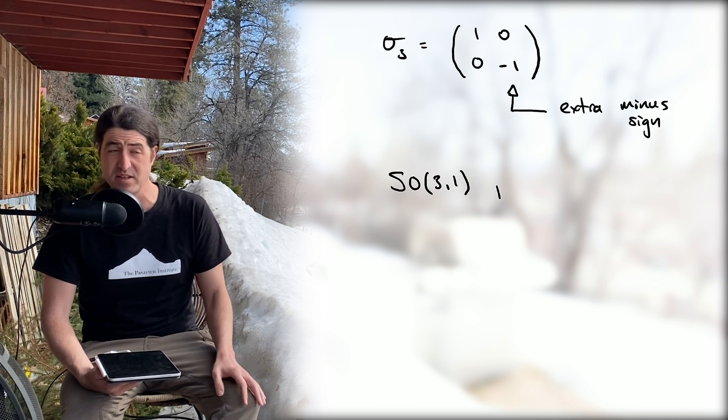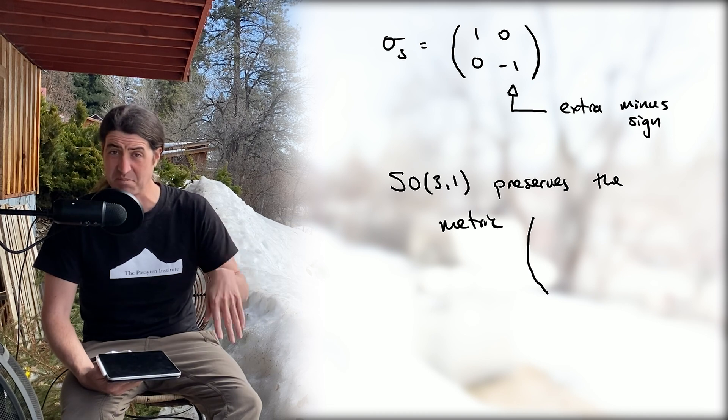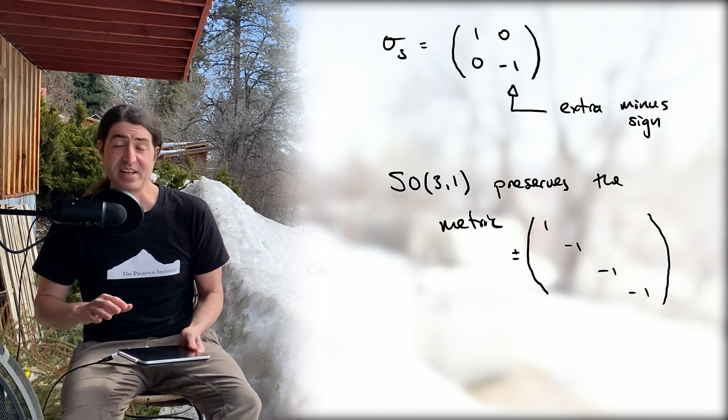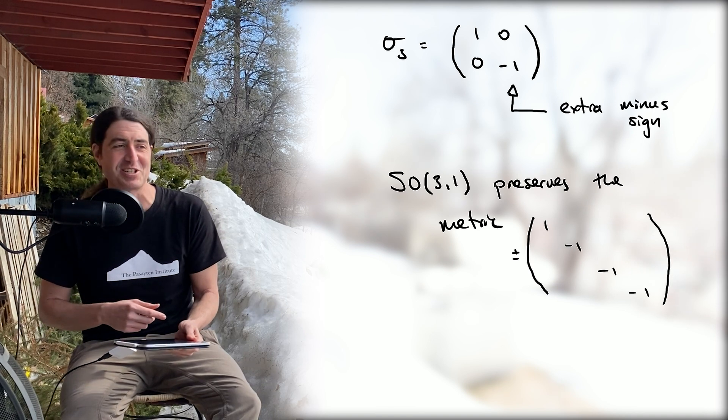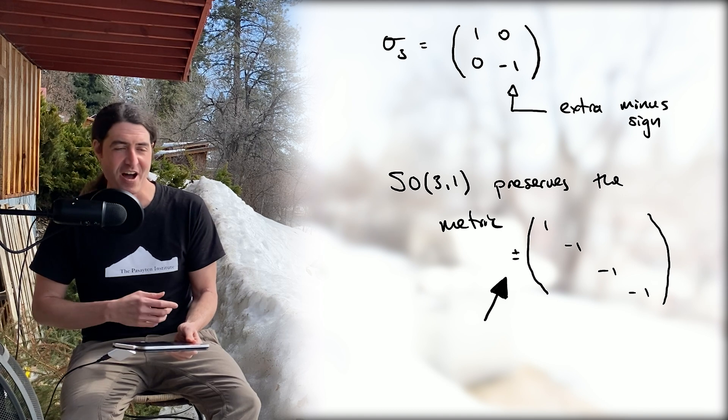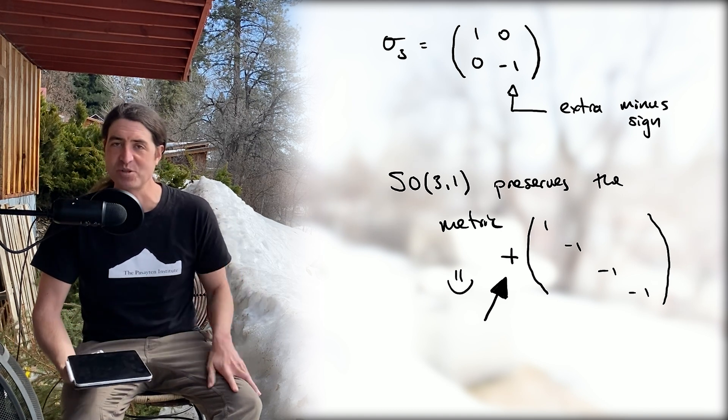This bonus minus sign is probably reminiscent to physicists of the Lorentz group. Indeed, the Lie group SO(3,1), the special orthogonal matrices that keep fixed the Minkowski metric from special relativity, comes to mind. Incidentally, if you want to start a fight with physicists, just make sure to pick a definite choice of minus sign for this matrix.